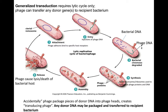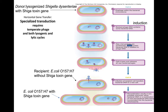Specialized transduction is a little bit harder to digest, so I have two different diagrams for this one. Let's use a specific example. In this example of specialized transduction, our donor is going to be a cousin of E. coli called Shigella dysenteriae. Shigella dysenteriae carries a powerful shiga toxin gene in their chromosome. Our recipient is going to be an E. coli, serotype O157H7, and the recipient initially lacked the shiga toxin gene.